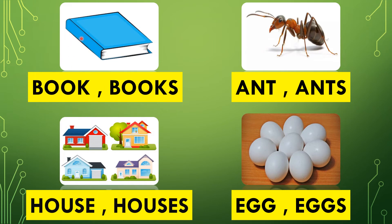Now let's see some more questions. See this picture. What is this, children? Book. How many books? Only one. So which is the correct answer — no S or S? No S. Only one, that's why B-O-O-K, book, no S. We will now make one circle in the correct answer: B-O-O-K, book. Now let's go to the next picture.